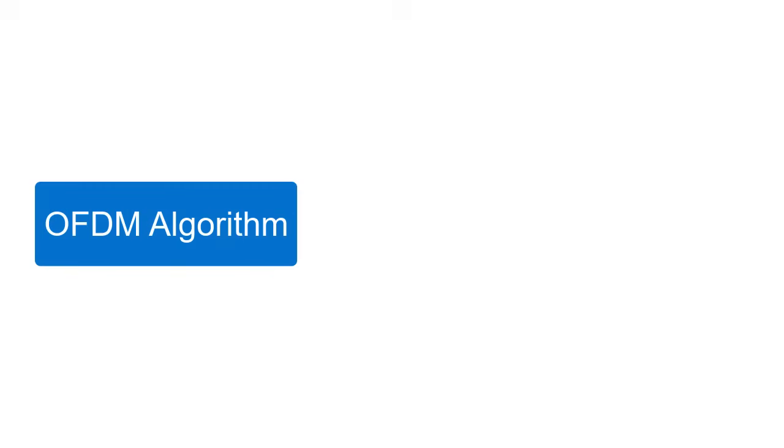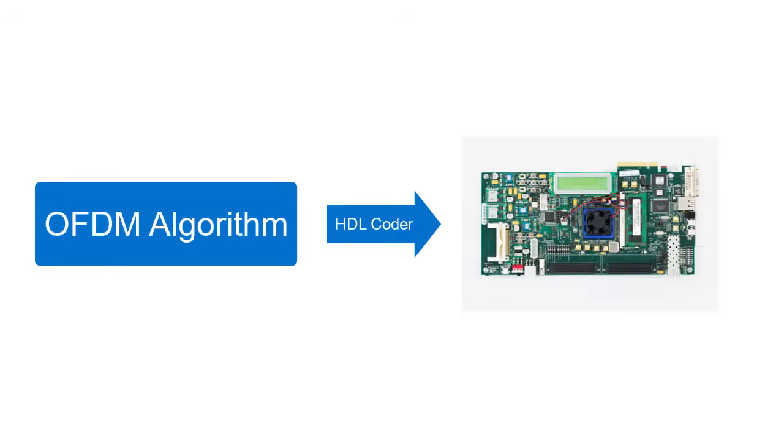You can use Wireless HDL Toolbox and HDL Coder to implement OFDM algorithms onto FPGAs and ASICs. Using HDL Verifier, you can then validate that your low-level implementation matches your golden reference design.